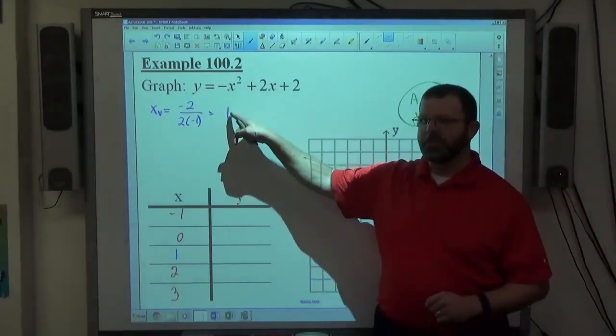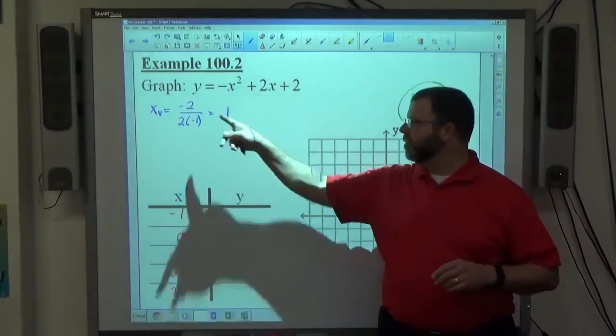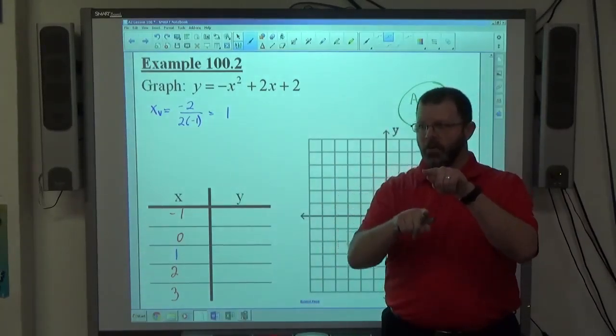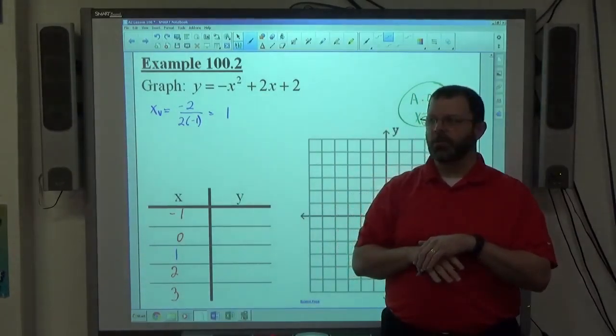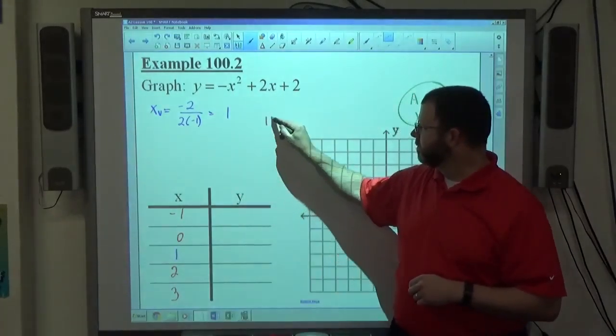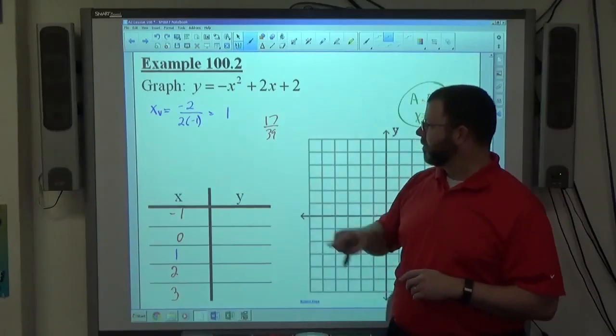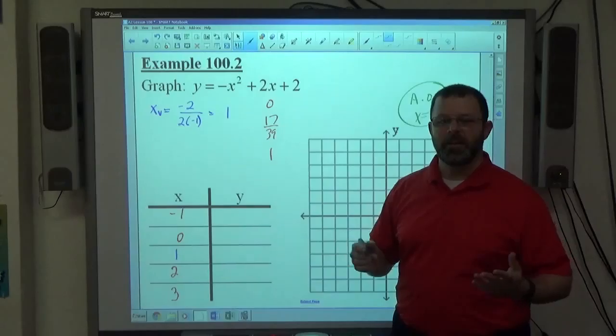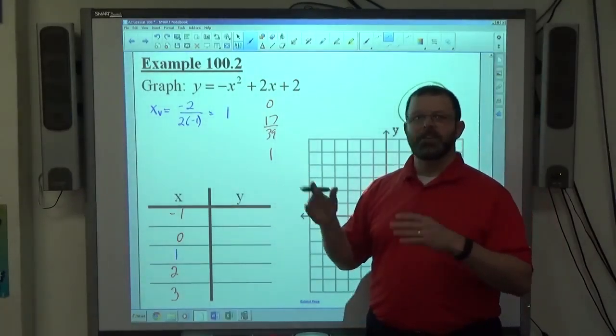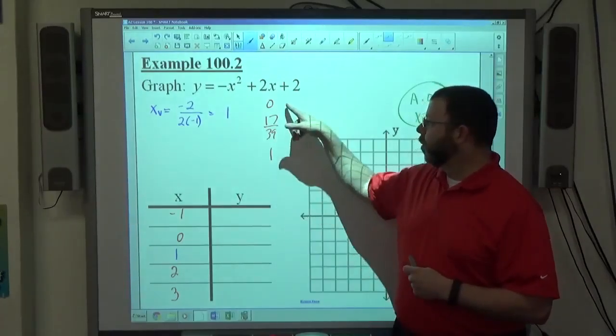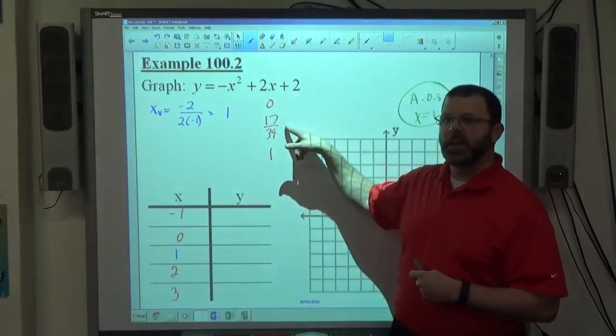If this equals a fraction, let's say this equals 1 half, pick 0 and negative 1, 1 and 2. Pick whole numbers. Pick integers. If that equals 17 39ths, 0 is right less than that, 1 is bigger. You don't have to pick like 56 39ths. You don't have to go up by one at a time. You won't get the symmetry though because that's not exactly halfway between.